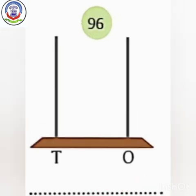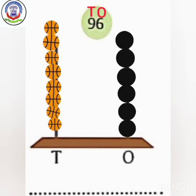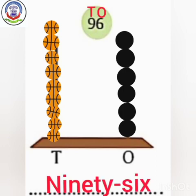Next is 96. We will write 10s and 1s first. Here we will write 1s and here we will write 10s. How many 1s do we have? We have 6 ones. How many 10s do we have? We have 9 tens, so we will make 9 beads at the 10s place. We also have to write the number name.